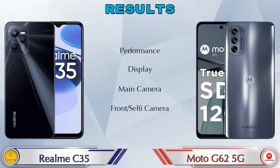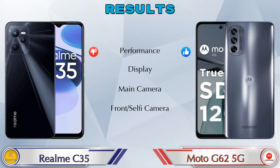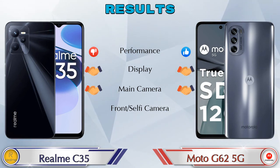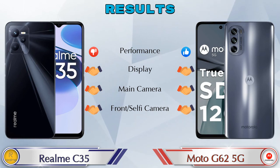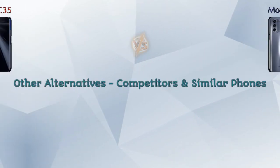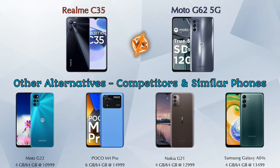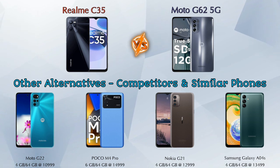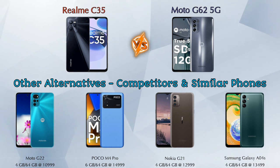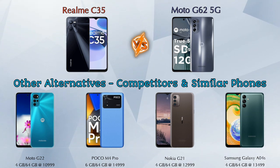Finally, talking about the results: in performance, the Moto G62 5G is ahead; in display, both phones are the same; in main camera, both are the same; in front selfie camera, both are the same. Now for other competitors at the same price segment — the first is Moto G22 4G, second is Poco M4 Pro, third is Nokia G21, and the last is Samsung Galaxy Euro 4S. Details about all these competitor phones are available in the description.